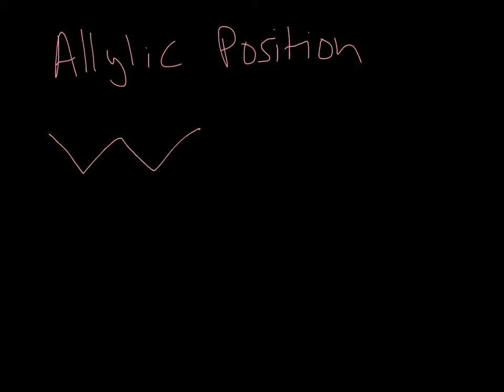The allylic position is pretty reactive because when an intermediate is formed, it's resonance stabilized. If we look at examples of allylic positions, this would be an allylic cation. When we have a leaving group leave and form a carbocation, we have resonance structures.